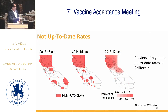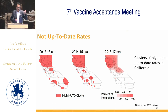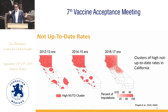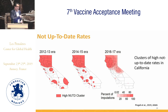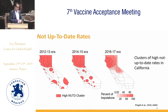Looking at different eras and clustering in Southern California — a set of clusters that received a lot of media coverage, partly because it's close to Hollywood, and the Disneyland outbreak happened in this area — after the first intervention (AB2109), the clustering wasn't significantly impacted. But after SB277 and the cumulative effect of the conditional entrance crackdown, there was indeed an impact on clustering.